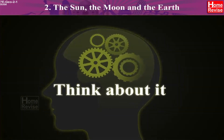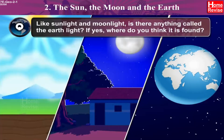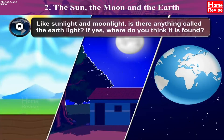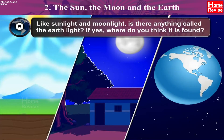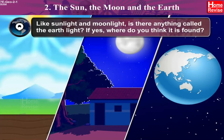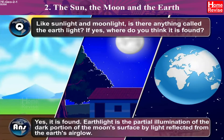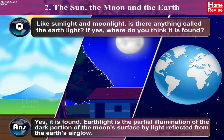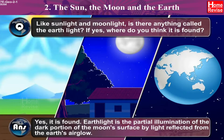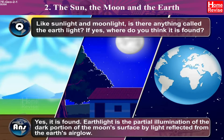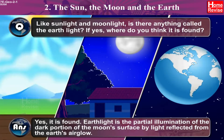Think about it. Like Sunlight and Moonlight, is there anything called Earth Light? If yes, where do you think it is found? Answer: Yes, it is found. Earth Light is a partial illumination of the dark portion of the Moon's surface by light reflected from the Earth's air glow.